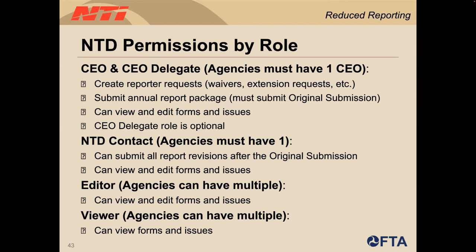We'll review the user roles for agency users in the NTD system. The user roles are: CEO or CEO delegate if applicable, the NTD contact, editors, and viewers. CEOs and CEO delegates have the highest level of access and permissions in the system, including the ability to create reporter requests like waivers or extension requests, submit the report, and view and edit reporting forms and issues. The CEO delegate role is optional and requires FTA approval. NTD contacts have the same permissions as the CEO aside from creating reporter requests and submitting the original submission. Editors may only revise and save forms, while viewers may only view the forms. You may disregard the safety roles as urban reduced reporters do not report safety data through the safety module.